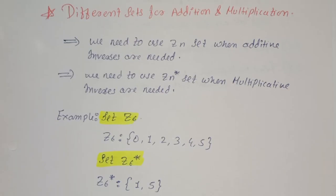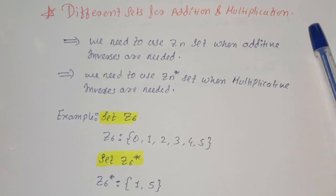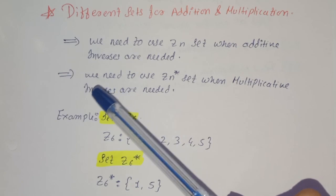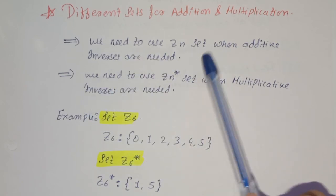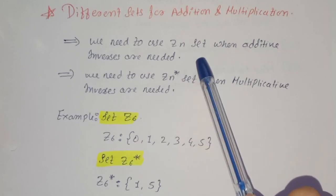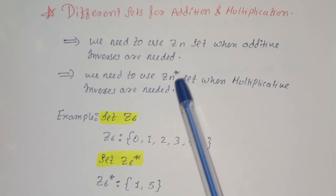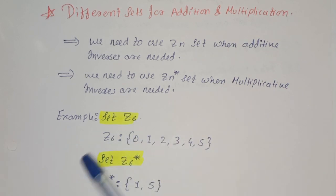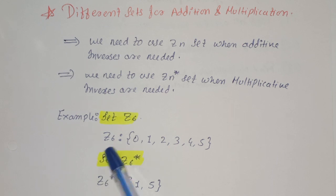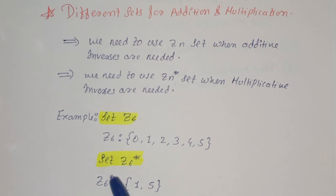Different sets for addition and multiplication. Sometimes in cryptography we need to use Zn set when additive inverses are needed, and we need to use Zn star set when multiplicative inverses are needed. So set z6, we will see an example.